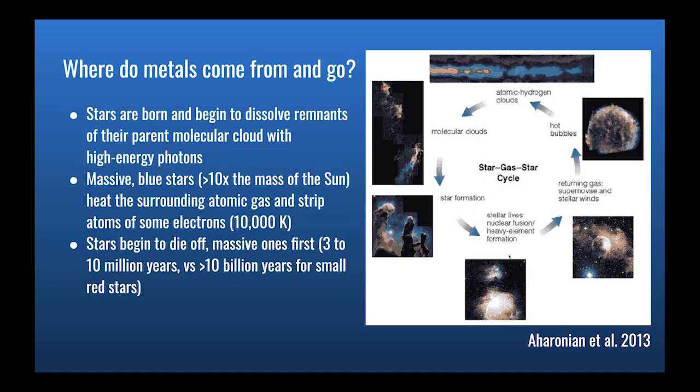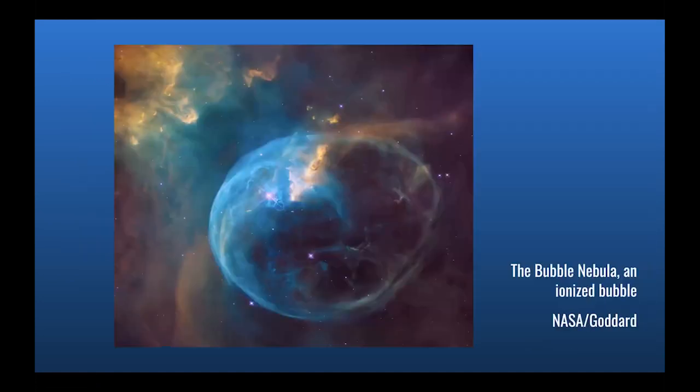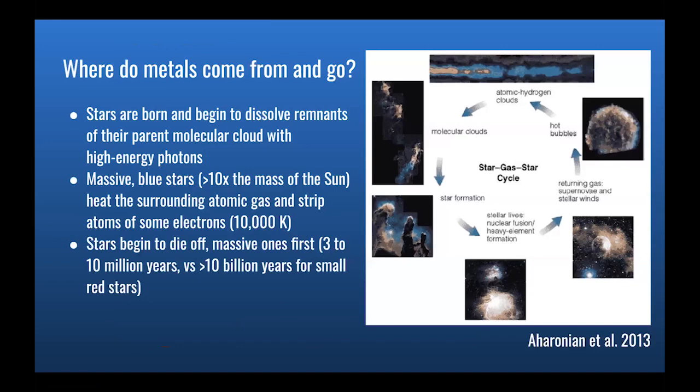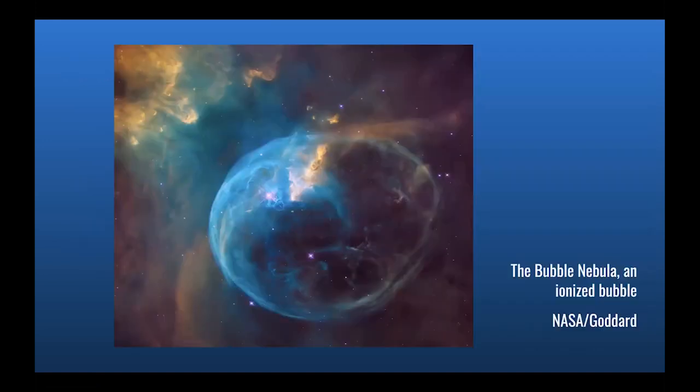Over time, as those clouds kind of swirl around and cool and condense, the atoms are going to be able to bond with each other to form molecules. So molecular hydrogen, or if there's any kind of trace elements in there, like carbon and oxygen, they can form bonds to form carbon monoxide. And those clouds are typically of order 10 Kelvin cold or warm, whatever you want to call it.